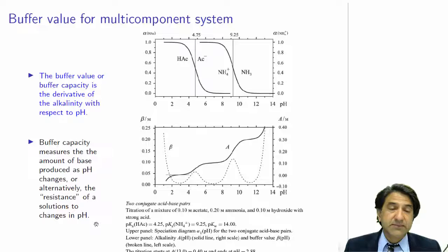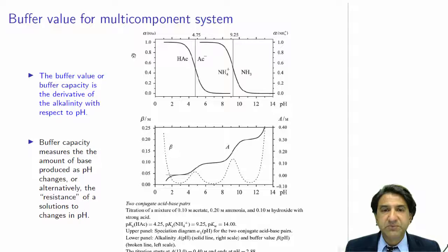Hi, welcome to Chemistry 3006, the hydrosphere. Let's look at buffer values for multi-component systems. Aqueous environments can be quite complicated, comprising multiple anions, cations, multiple components. The buffer value is still the derivative of the alkalinity with respect to pH, but because there's multiple components in the solution, we expect the behavior will be more complicated.